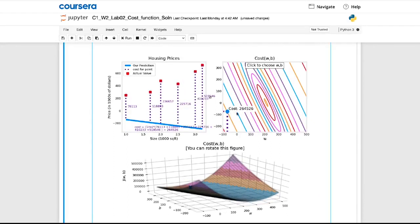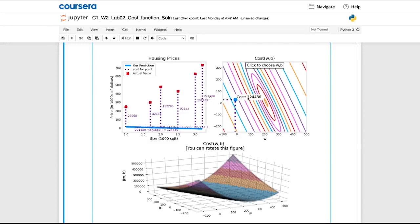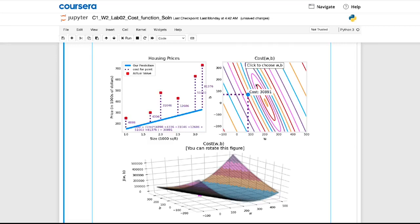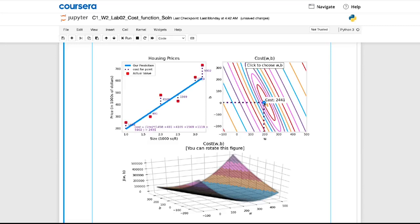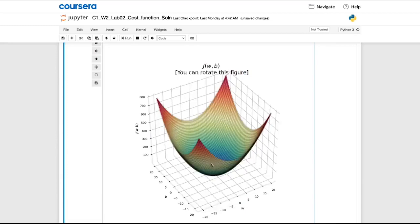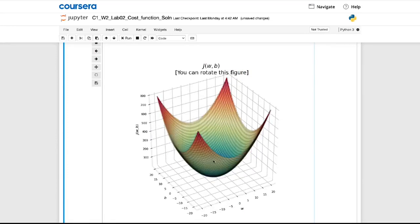In the optional lab, you also can play with an interactive contour plot. Check this out. You can use your mouse cursor to click anywhere on the contour plot, and you will see the straight line defined by the values you chose for the parameters w and b. You see a dot appear also on the 3D surface plot showing the cost.